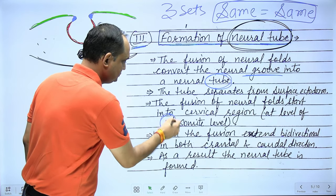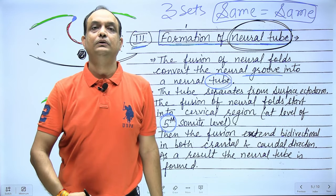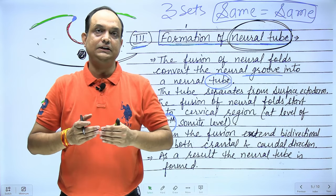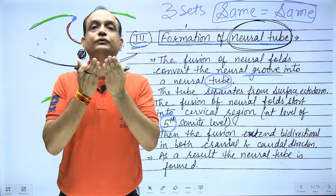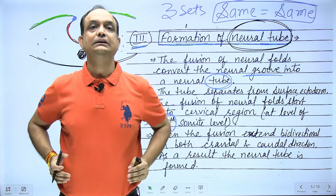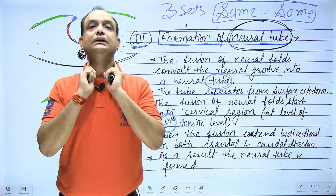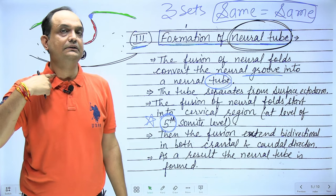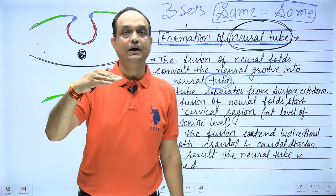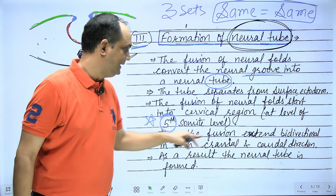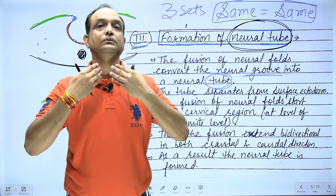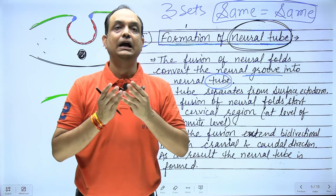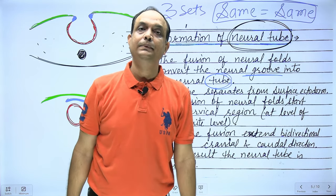This is an exam question: from which point do the folds fuse first? The answer is the upper part — the folds start to fuse in the cervical region, specifically at the level of the fifth somite. Then fusion occurs in a bidirectional manner: once fusion starts at the fifth somite level, it proceeds in both the upward and downward directions until a complete tube is formed.